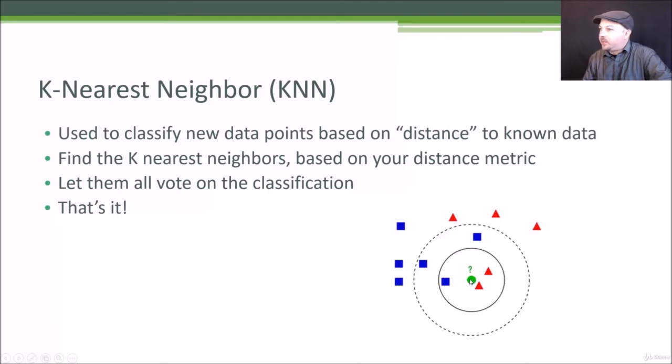We have some sort of distance that we can compute based on rating and popularity between any two points on the scatterplot. Let's say a new point comes in, a new movie that we don't know the genre for. What we could do is say let's set K to three and take the three nearest neighbors to this point on the scatterplot. They can all then vote on the classification.